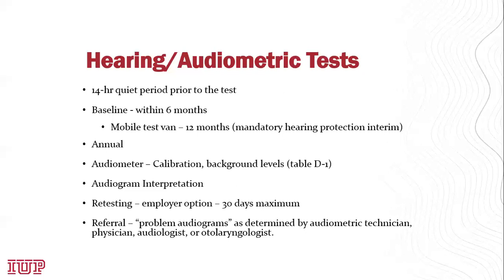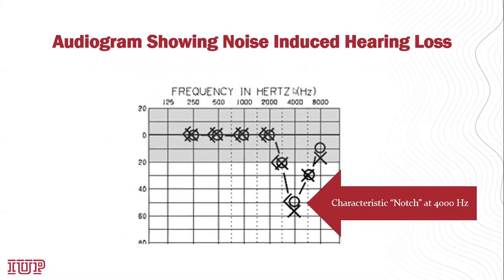This slide shows an example of an audiogram from someone who suffered a noise-induced hearing loss. You can see threshold levels with a notch around 4,000 hertz — that is indicative of noise-induced hearing loss, as opposed to conductive hearing loss. For a conductive hearing loss, the hearing capability would be roughly the same across all frequencies rather than reduced at higher frequencies.